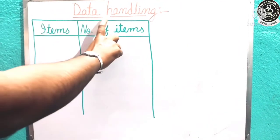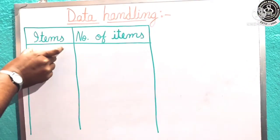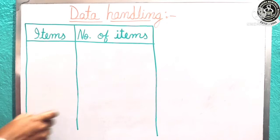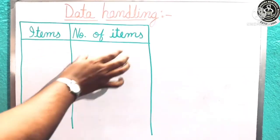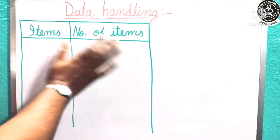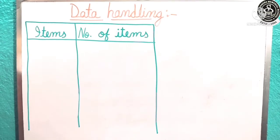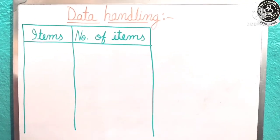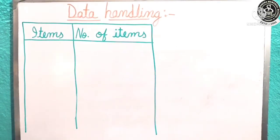Children, today data handling you are doing the second part. We have learned that this side always item will be given and this side, how many items? We have collected the data about the items there. This space we are going to write. Here I have collected some of the items and now you will count and tell me how many it is, or what is the number of that given item.